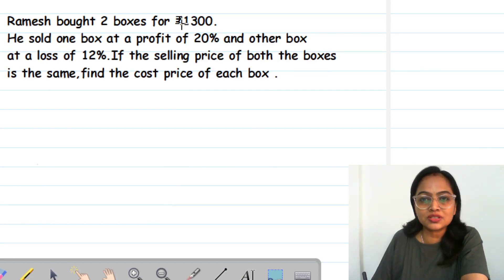The question is: Ramesh bought 2 boxes for Rs. 1300. He sold 1 box at a profit of 20% and another box at a loss of 12%. The selling price of both the boxes is same. Find the cost price of each box.